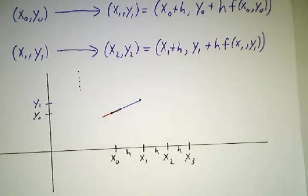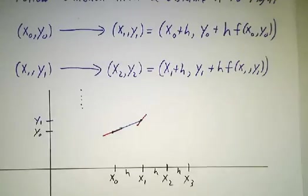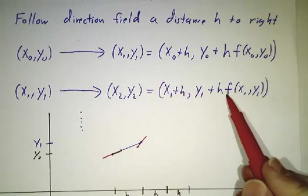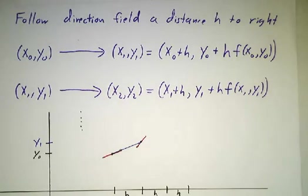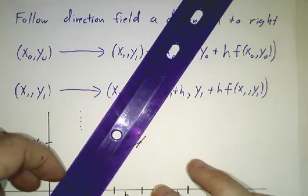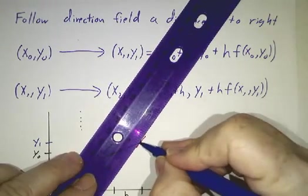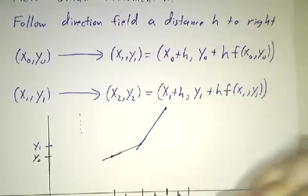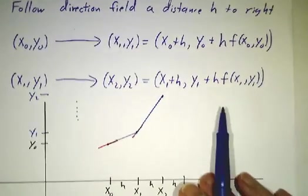And then you consult your direction field, you say, the direction field at this spot is something different. You figure out the direction field of that spot is f of x1, y1, has a slope of f of x1, y1. And then you follow that direction field until you get to the value x2 and now here we are at y2. And you keep on going, one step at a time.